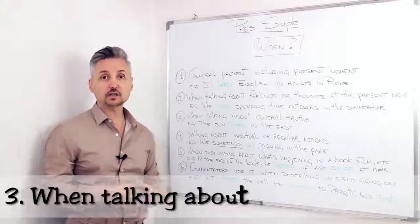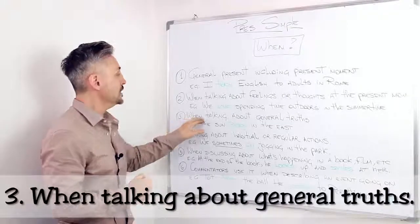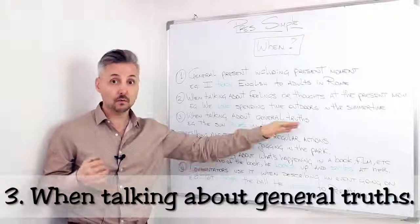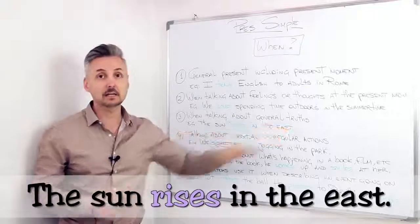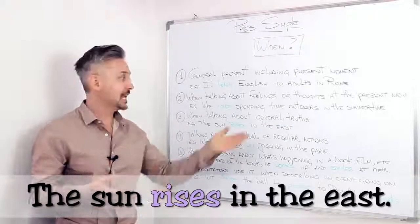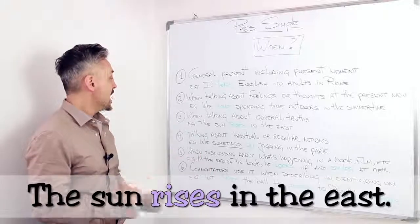Now, the third situation where we use the present simple or the simple present, is when talking about general truths. For example, the sun rises in the east. This is always true and is a general truth.